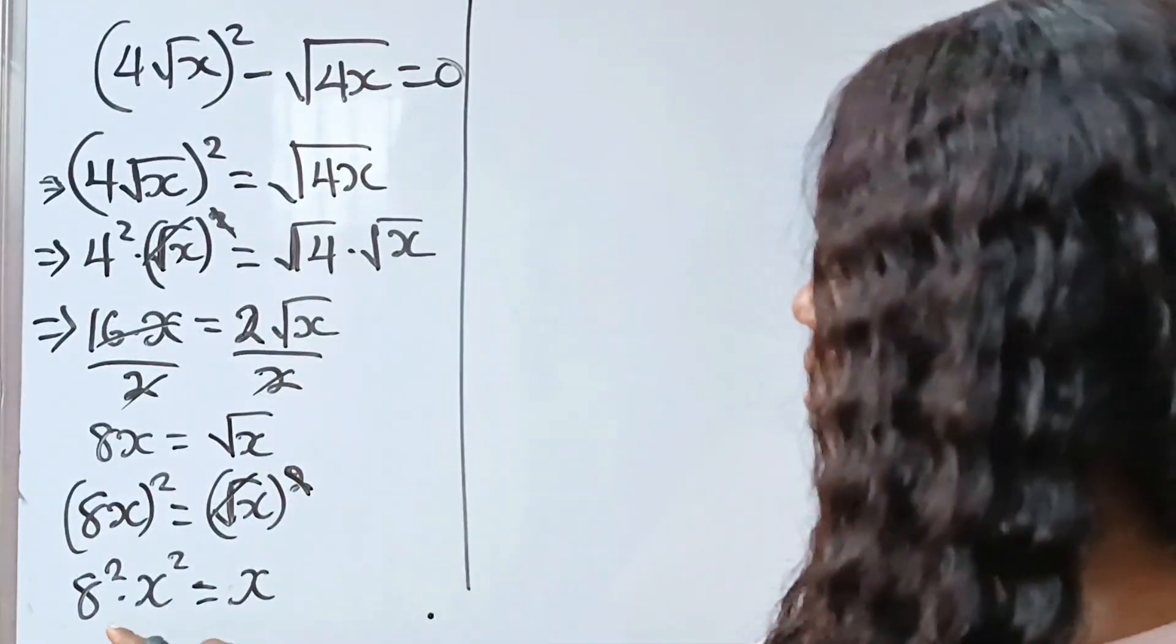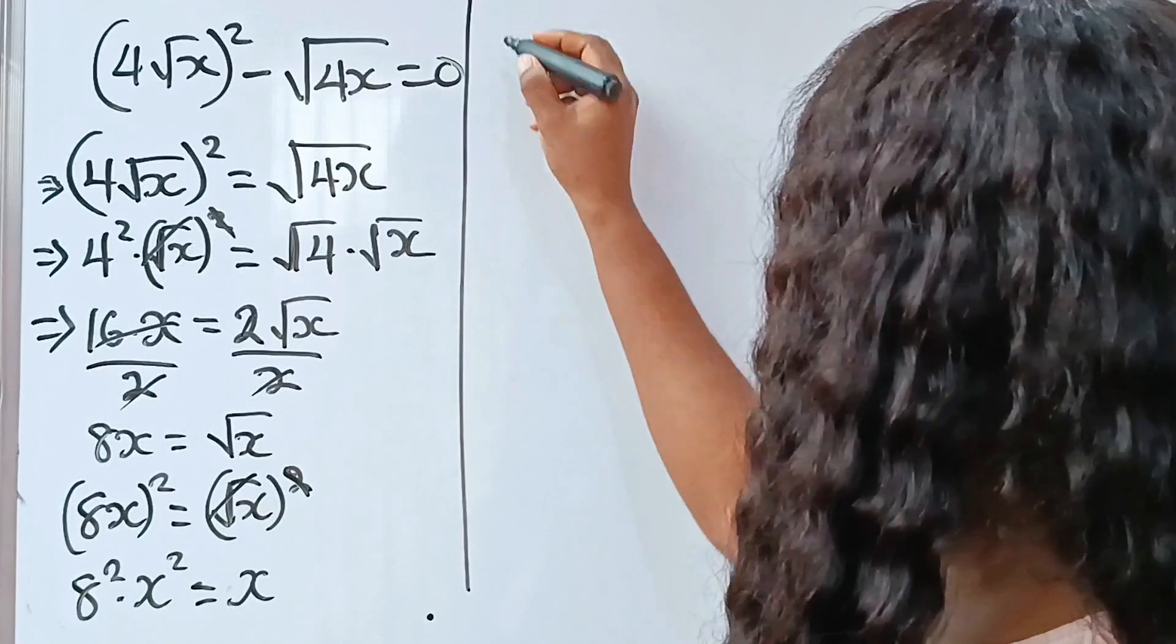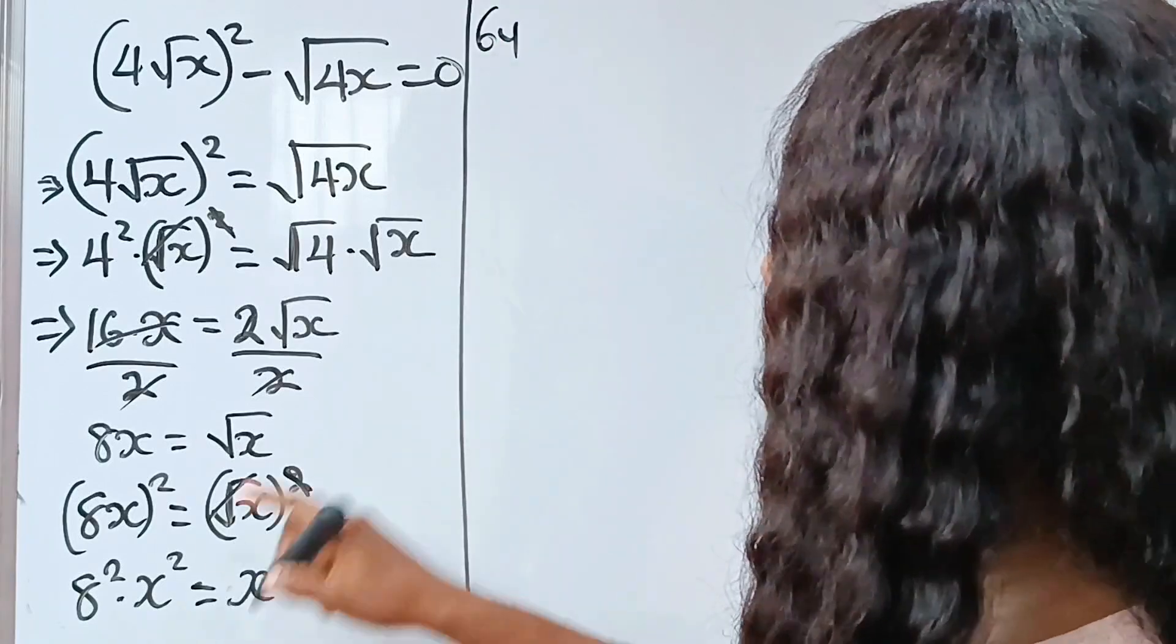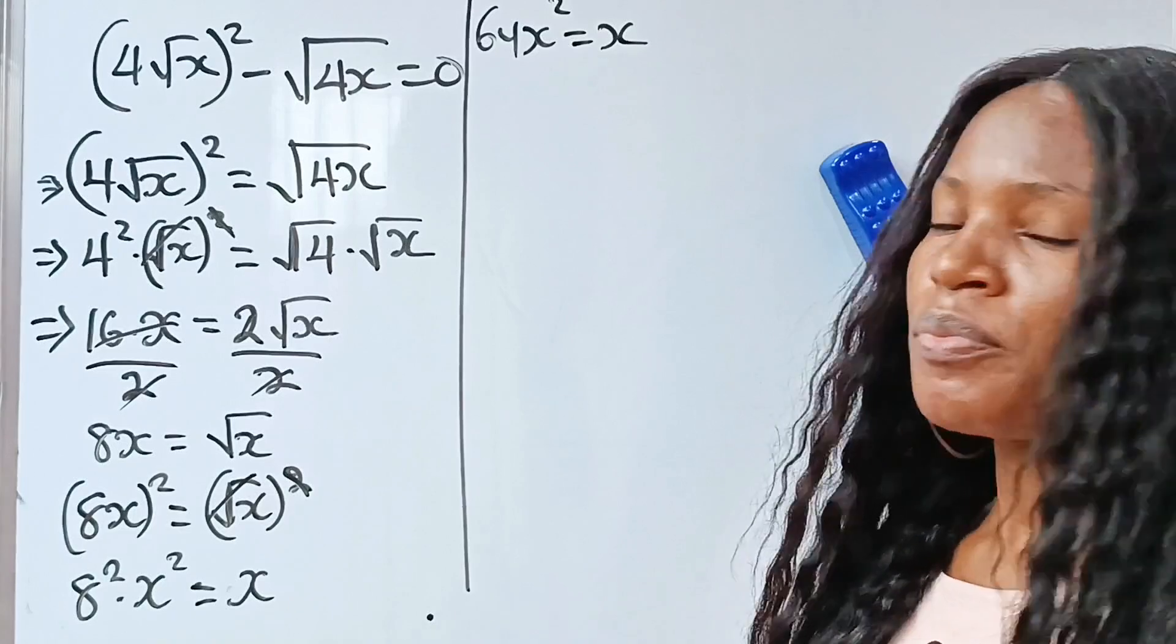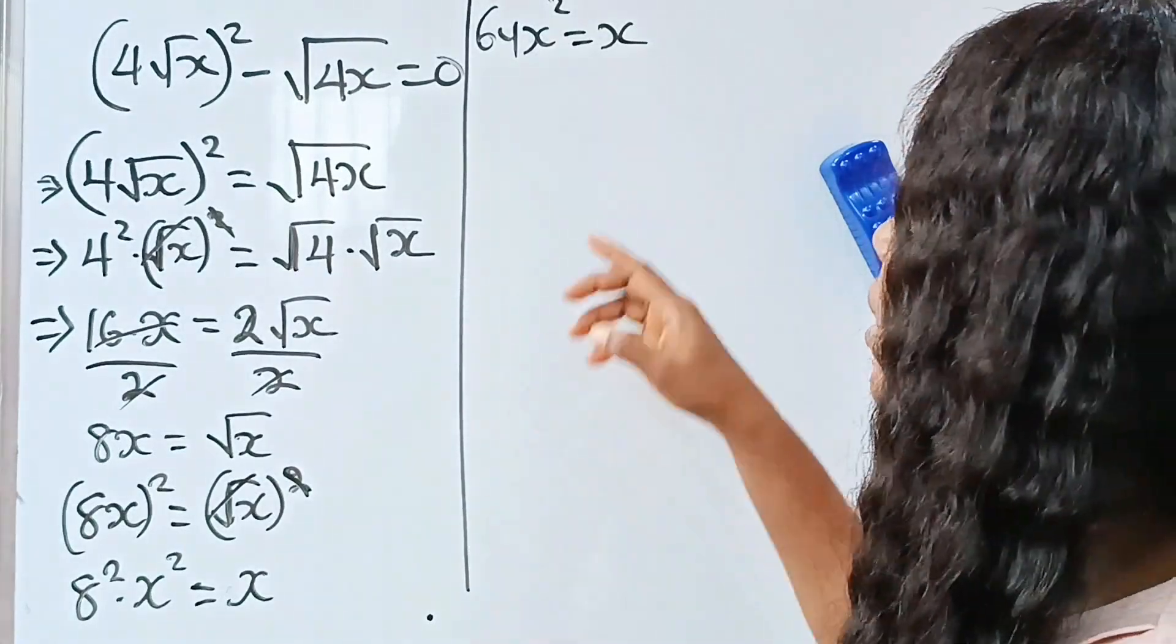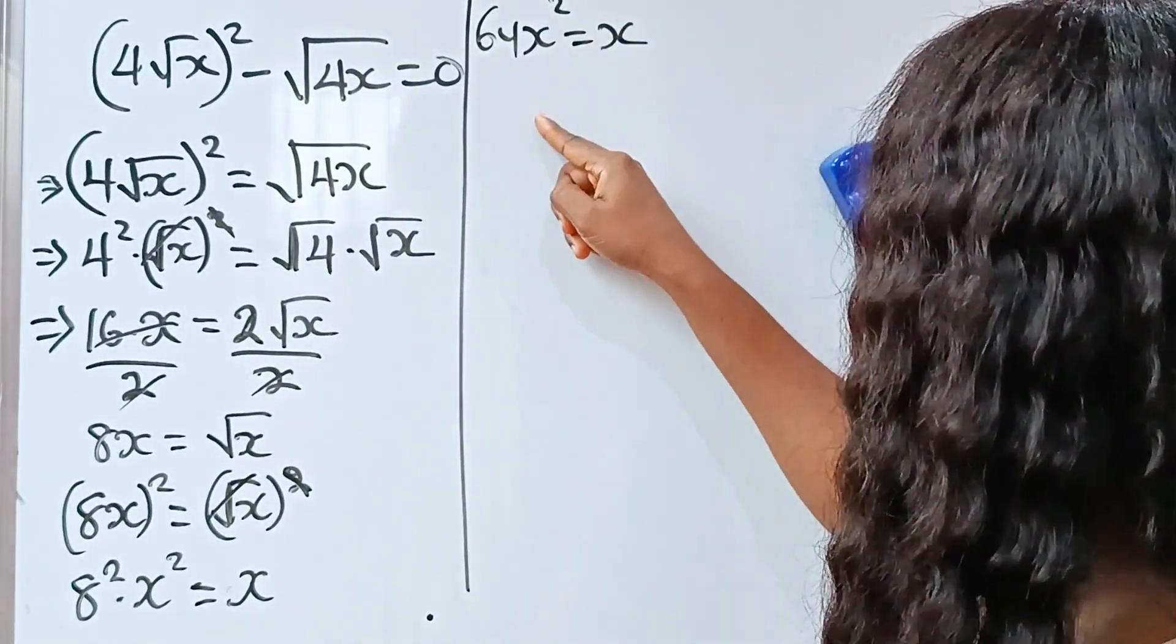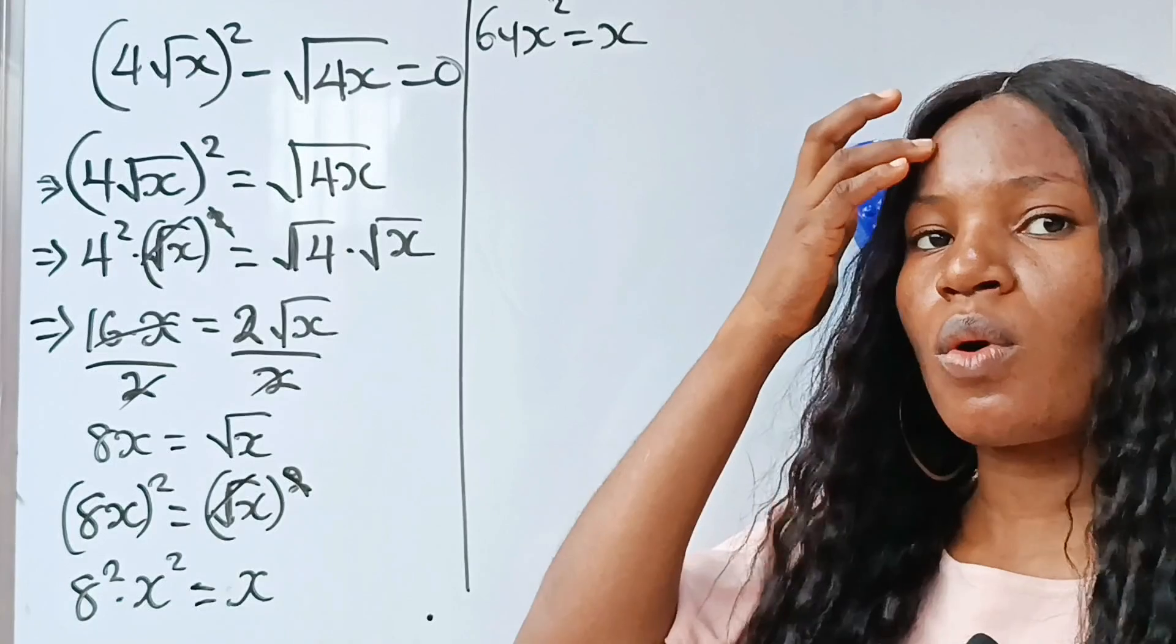So, that means what we have here is 8 squared is 64. Then we have x squared is equal to x. At this point, let's transfer this to this side of the equation and make everything to be equal to 0.